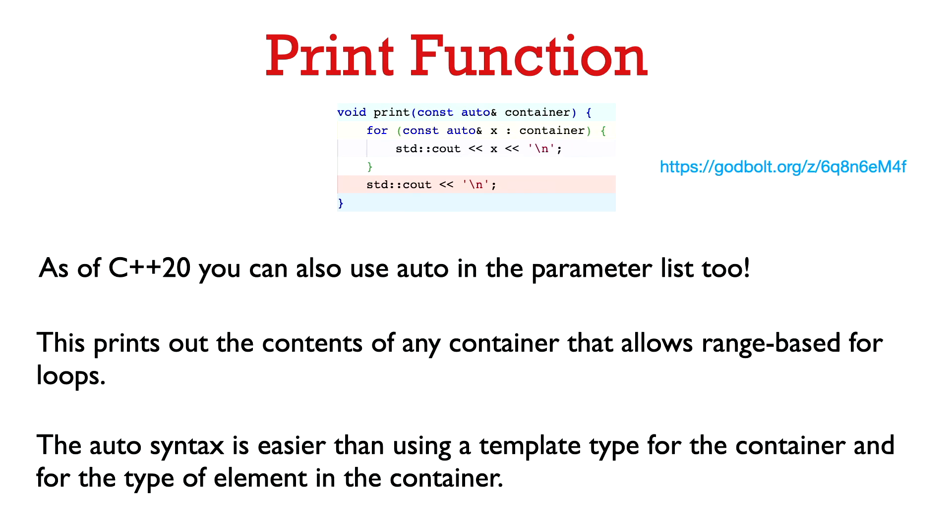And now, since C++ 20, we can even take the use of auto a step further. And now auto can be used in the parameter list. So now we can just say, hey, compiler, actually deduce the type of the argument that I'm passing into the print function. So now this print function is able to print out the contents of any container which allows a range-based for loop. So basically the compiler is deducing the type of the container. And then in the for loop, it's deducing the type of element inside that container.